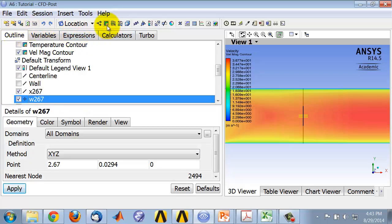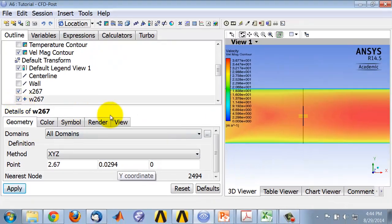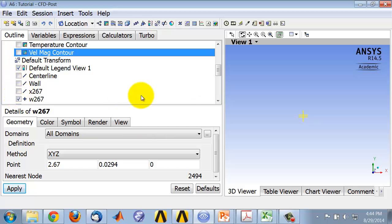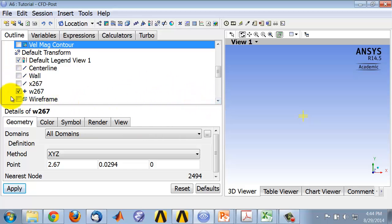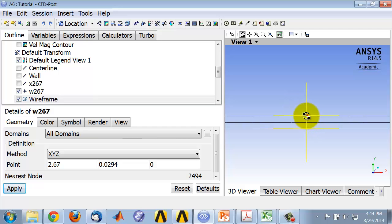I probed the wall shear at the location at which I need the wall shear. What I did was I created a location point at 2.67 and 0.0294, which is the radius. I can look at that location. Let me turn this off and turn on the wireframe and zoom in here. You can see I created that location.